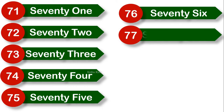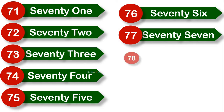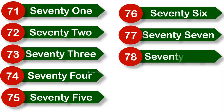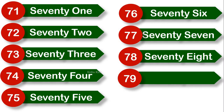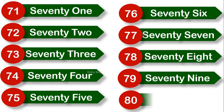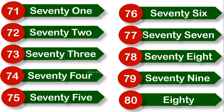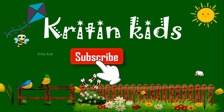S-E-V-E-N-T-Y, 70. S-E-V-E-N, 7 — 77. 78: Seventy, 70. E-I-G-H-T, 8 — 78. 79: Seventy, 70. N-I-N-E, 9 — 79. 80: E-I-G-H-T-Y — 80.